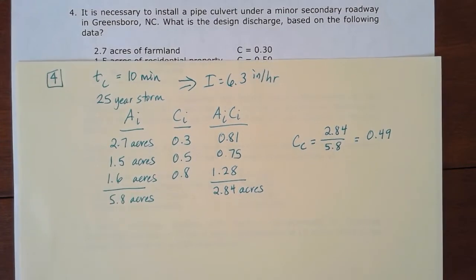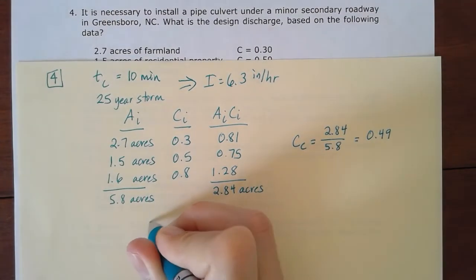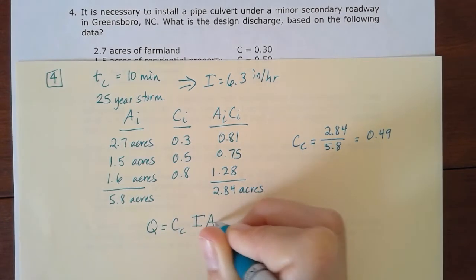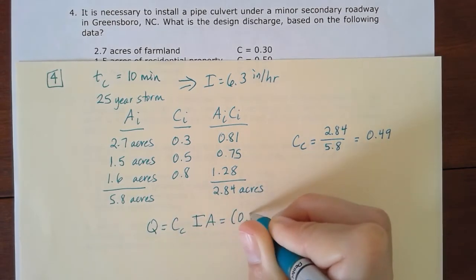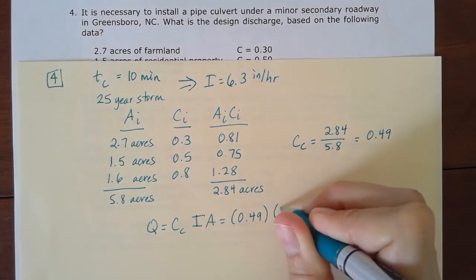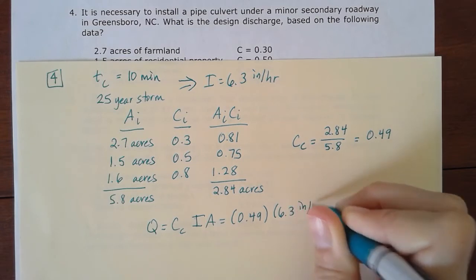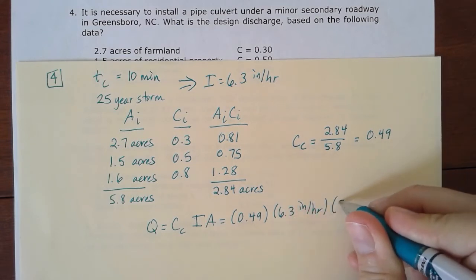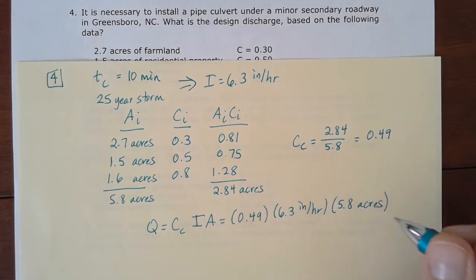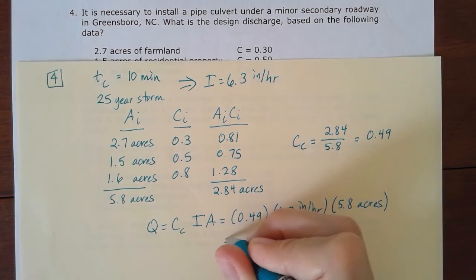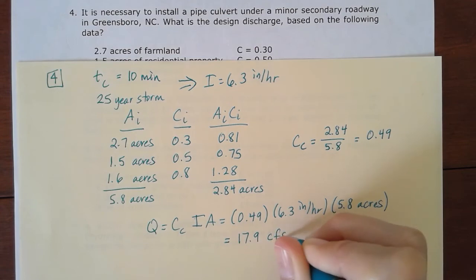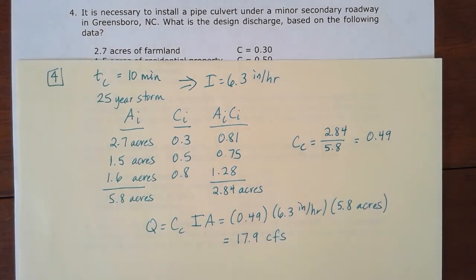And so now to solve, I just go ahead and use my rational equation that Q is that composite coefficient times that intensity times the area. So in this case, we have 0.49 for the composite coefficient we found. Intensity of 6.3 inches per hour, and that whole area of 5.8 acres. And remember that when we multiply inches per hour times acres, it's about equivalent to 1 cubic foot per second.